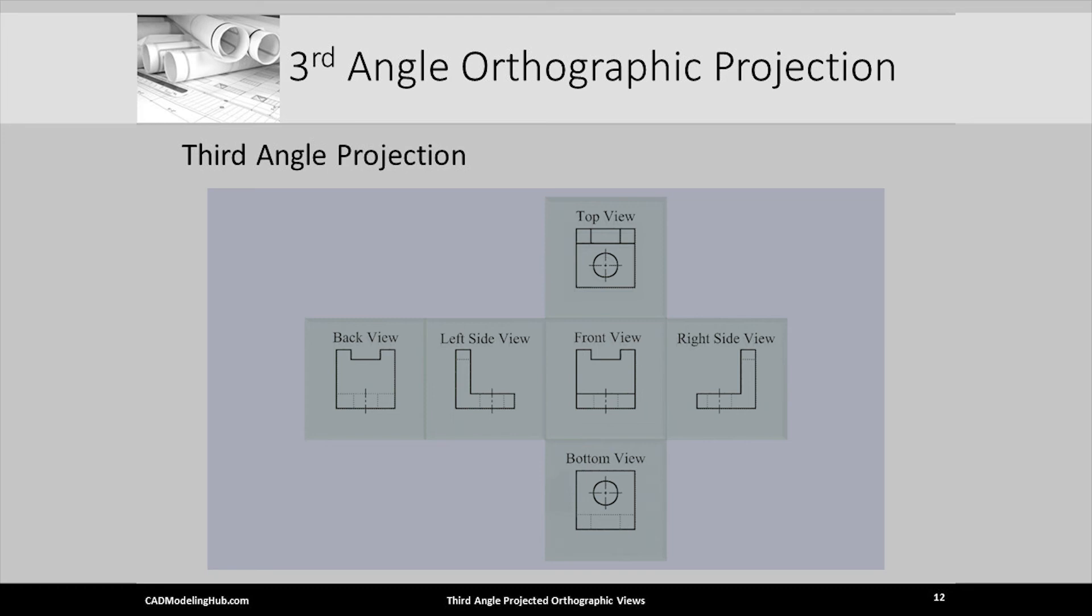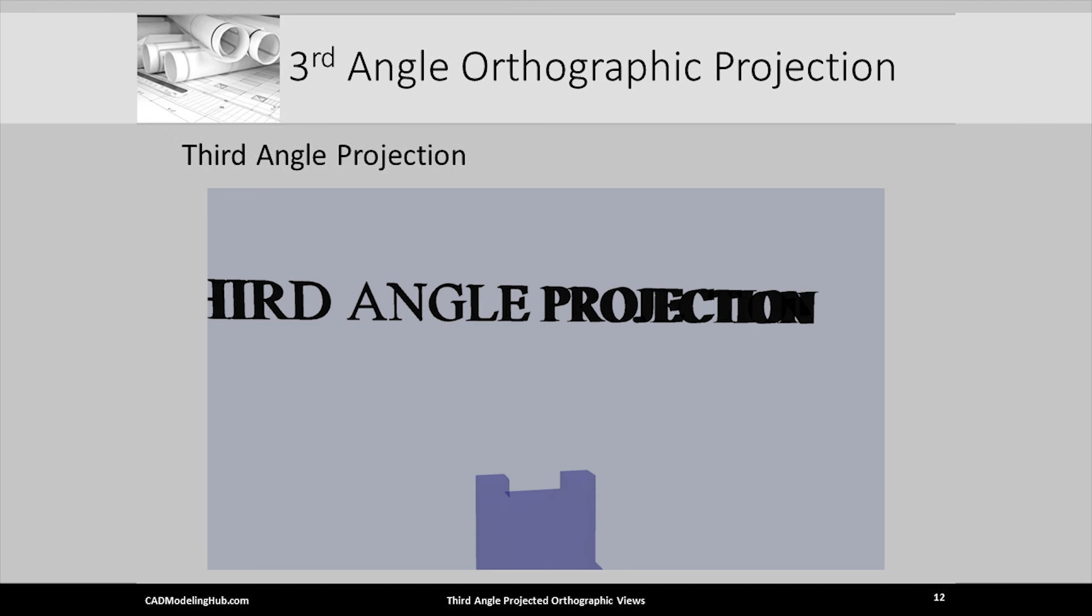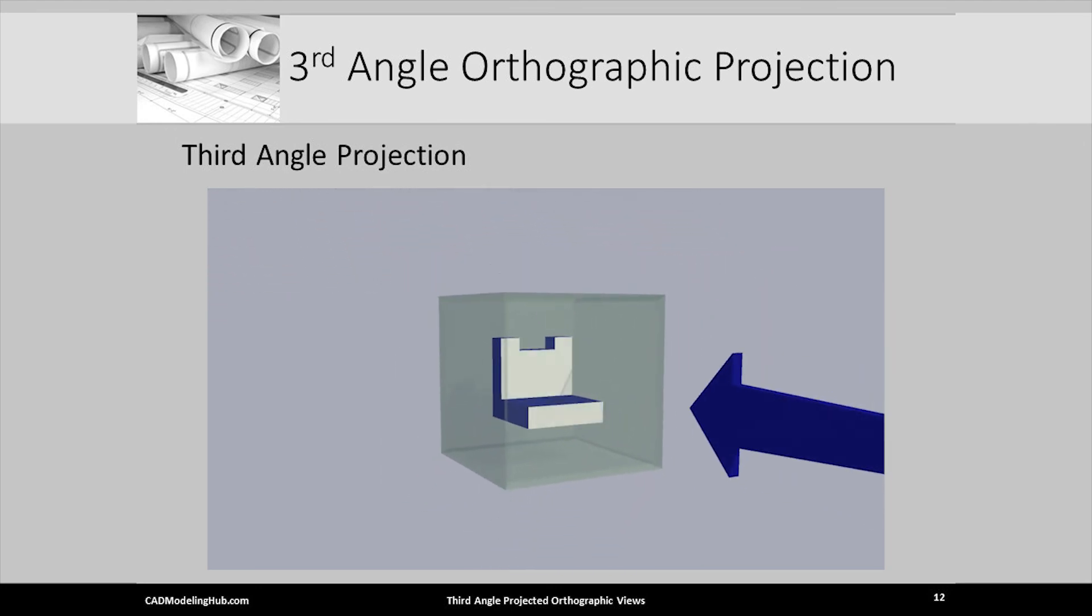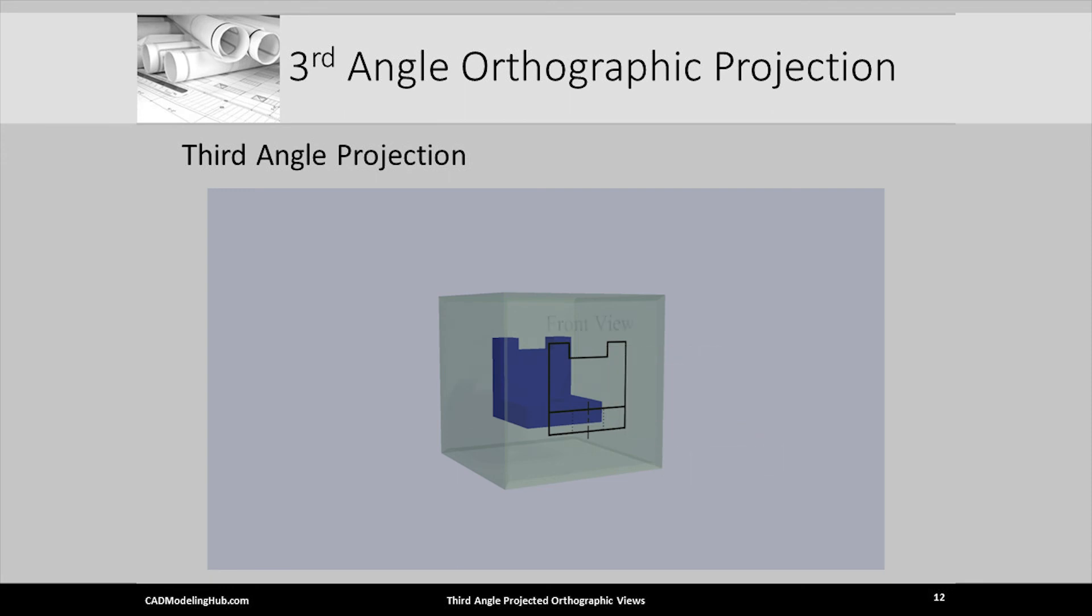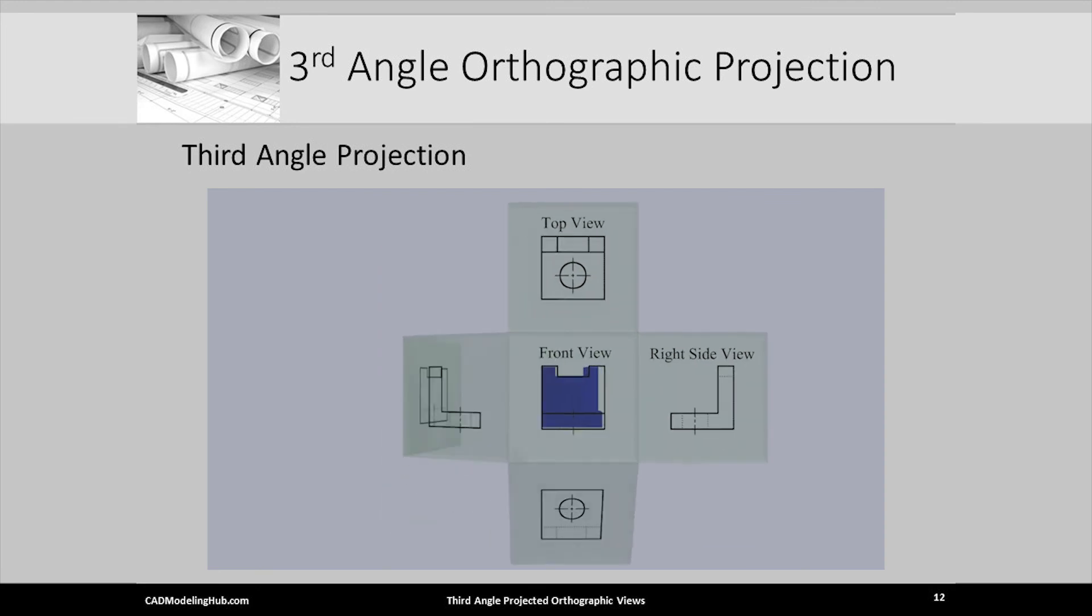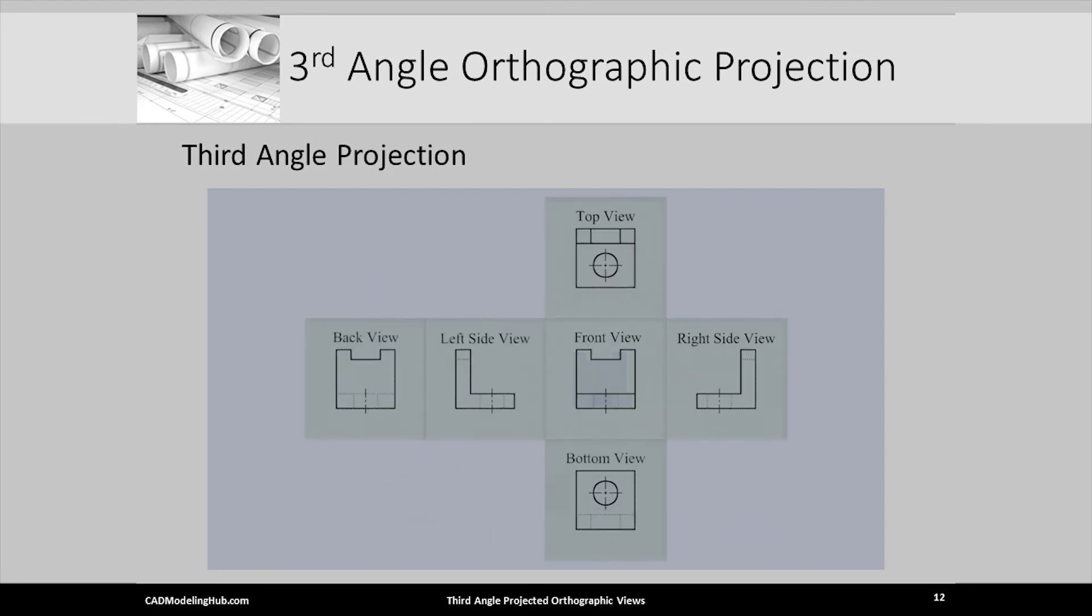Watch the animation once again. In the United States and Canada, when creating an engineering drawing, the top view is always above the front view and the right side view is always to the right of the front view. This is because we use the ASME third angle drawing standard.